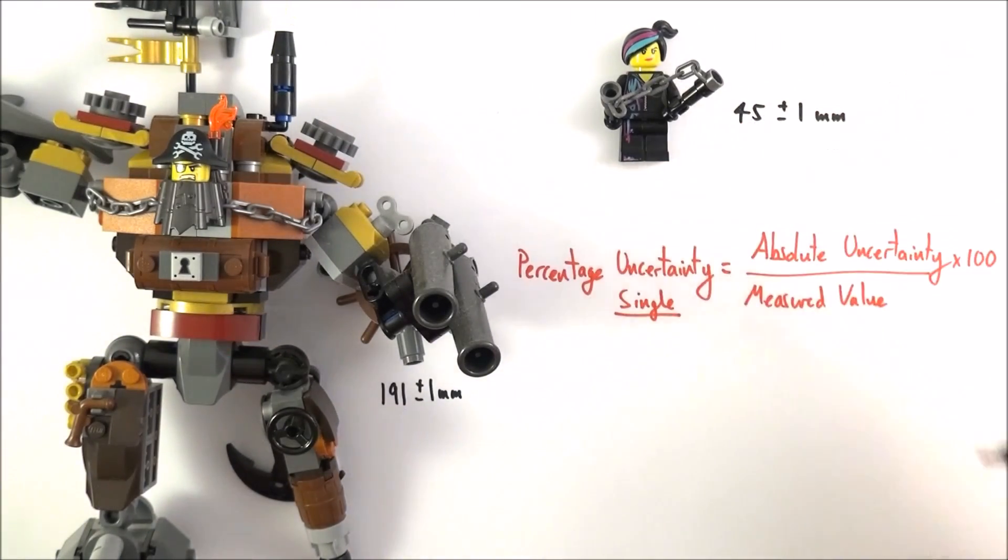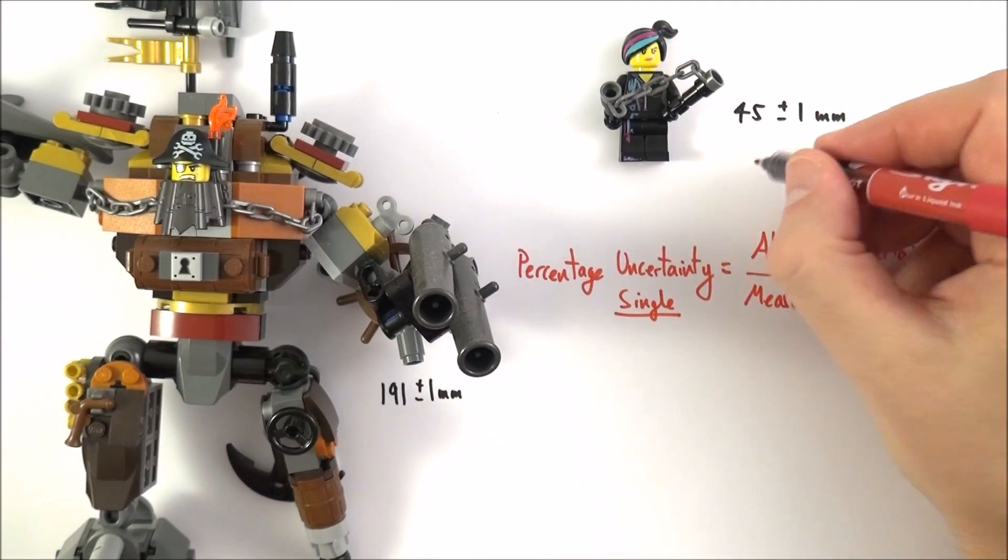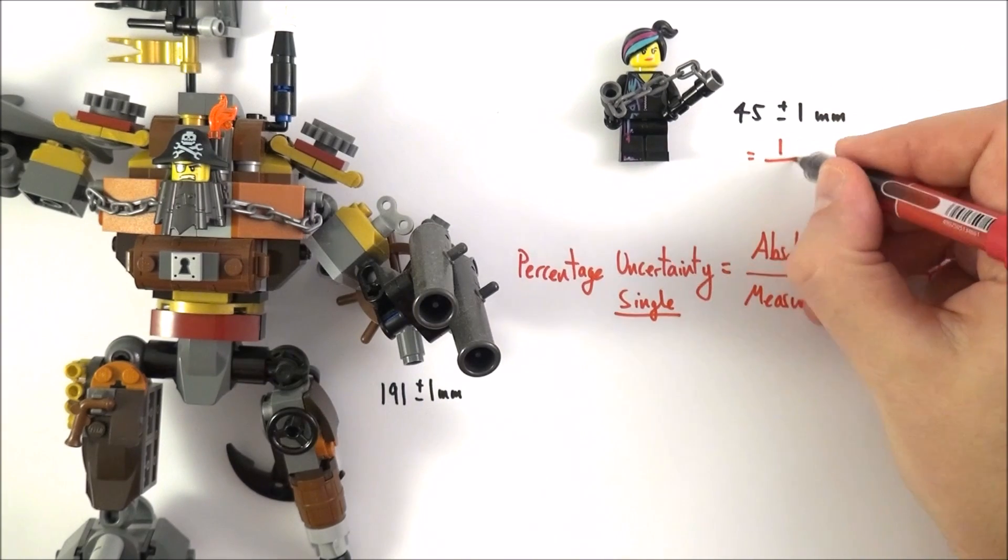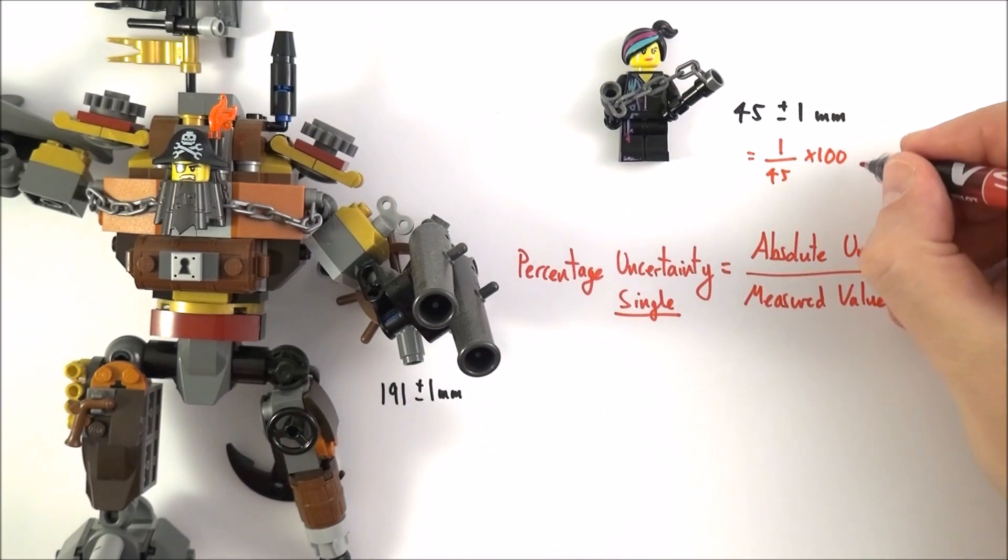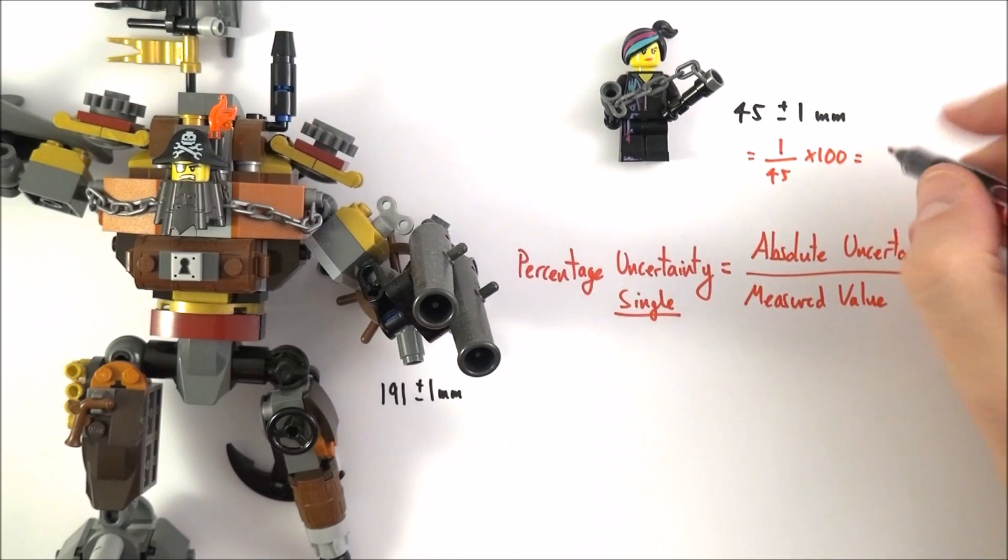Now in the case of Wildstyle up here, what we can see is that the percentage uncertainty is going to be equal to the absolute uncertainty which is 1 over the measured value of 45 multiplied by 100. And when you work that out on your calculator we find that in this case the uncertainty in this value is equal to 2.2 percent.